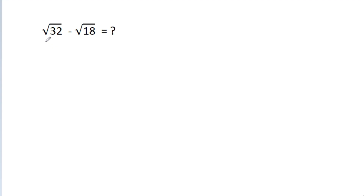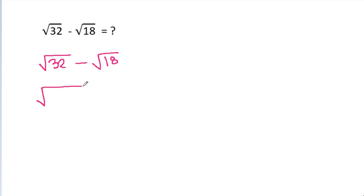We have to find the value of a square root of 32 minus a square root of 18. So we have a square root of 32 minus a square root of 18, and 32 is 16 times 2, minus a square root and 18 is 9 times 2.